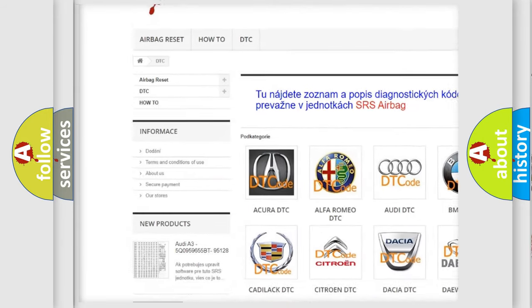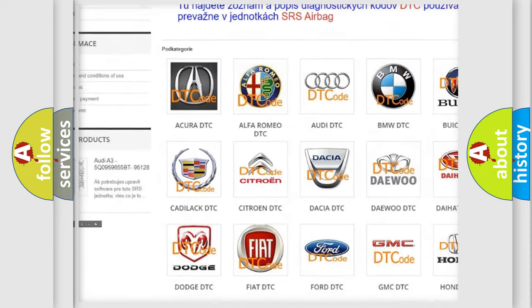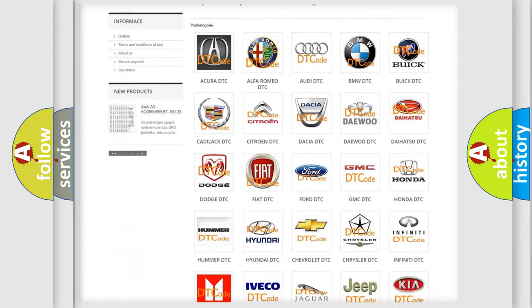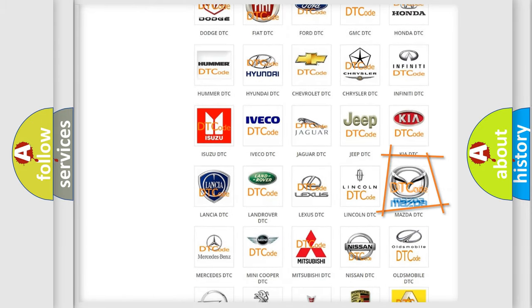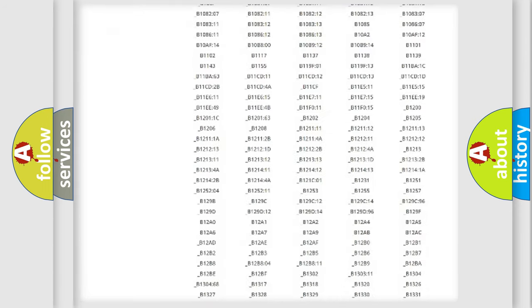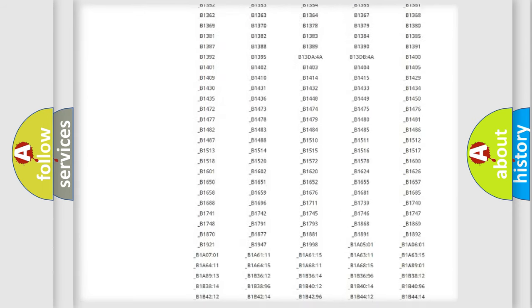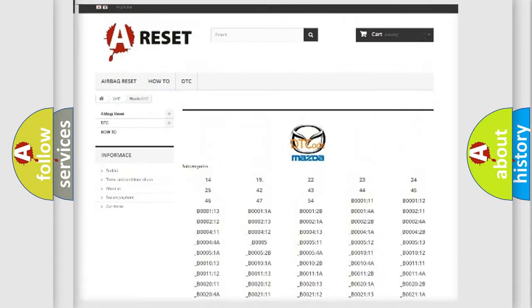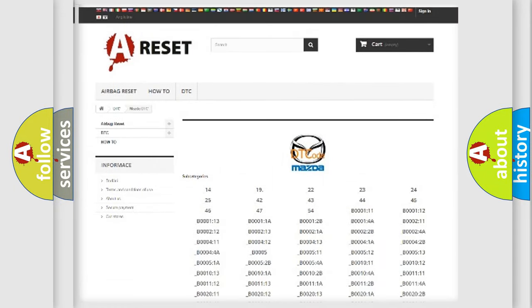Our website airbagreset.sk produces useful videos for you. You do not have to go through the OBD2 protocol anymore to know how to troubleshoot any car breakdown. You will find all the diagnostic codes that can be diagnosed in Mazda vehicles. Also many other useful things.